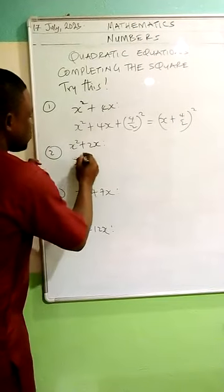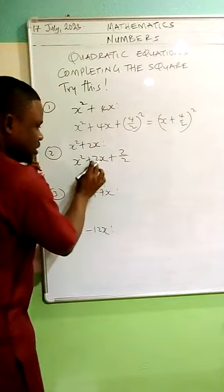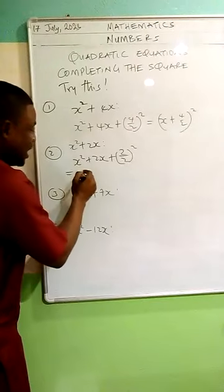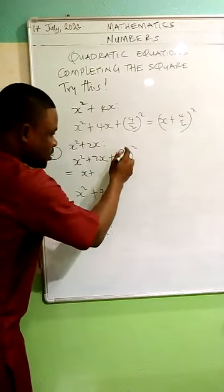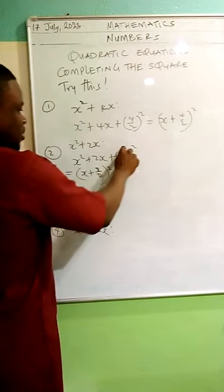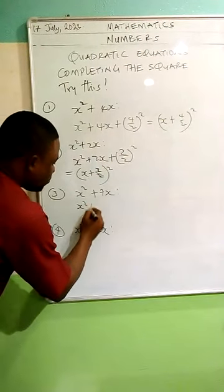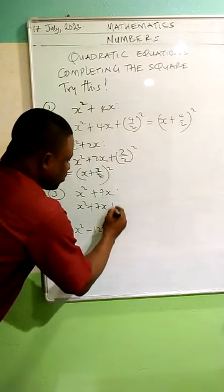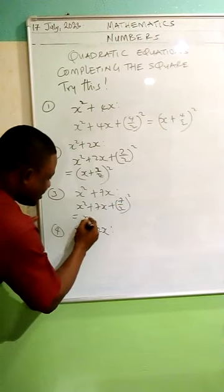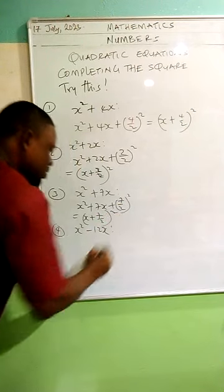Let's do this again. For x squared plus 2x: I'm adding 2 over 2, all squared, then it translates to x plus 2 over 2, all squared. You take what is inside and bring them together. For x squared plus 7x: I'm adding 7 over 2 all squared, and it ends up giving me x plus 7 over 2, all squared. Is that right?